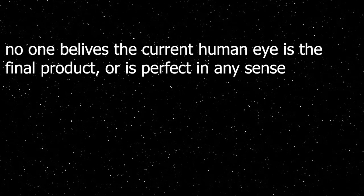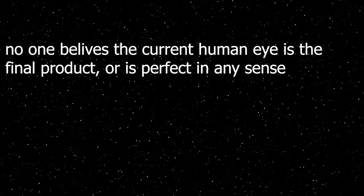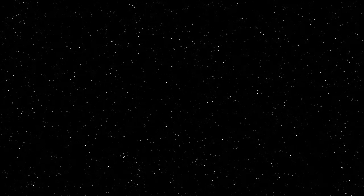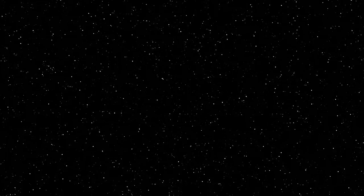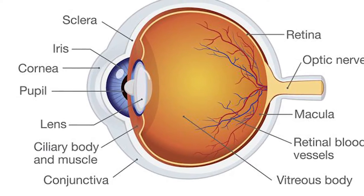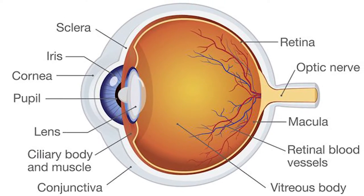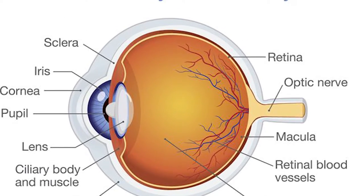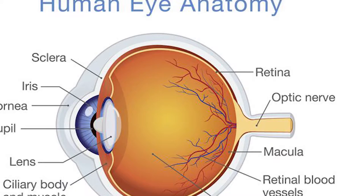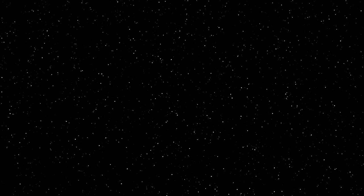Darwin, or anyone for that matter, doesn't imply the human eye in its current form is perfect in any way, shape, or form. The human eye has evolved into a retina — layers of cells at the back of the human eye. It took billions of years to have eyes as good as ours, and it's still nowhere near perfect.